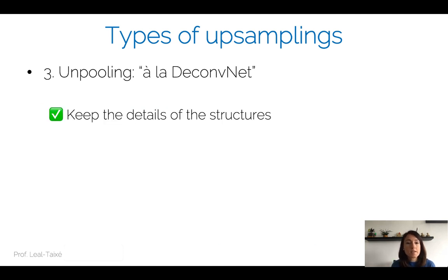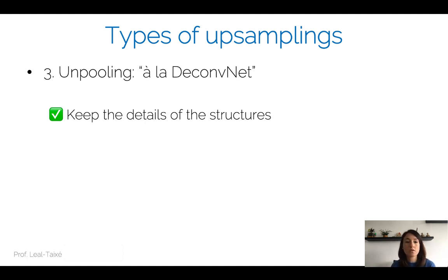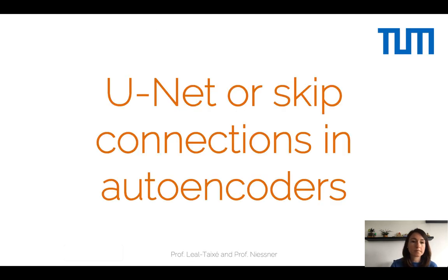In the deconvnet, this type of unpooling helped keep the details of structures — keeping edges in their original position. The same will happen when we use it inside autoencoders. Another crucial element to get good pixel-wise predictions is skip connections.